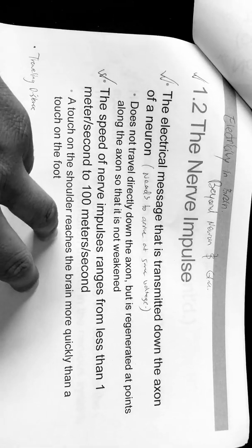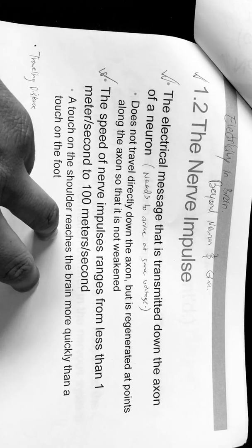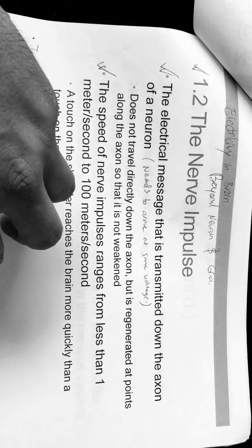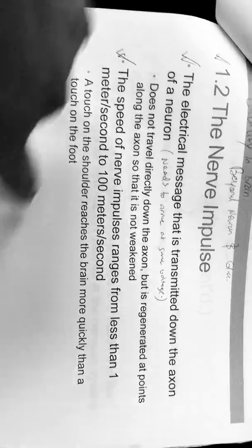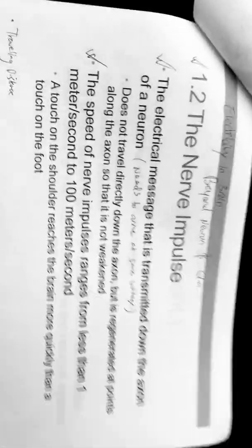The electrical messages that are transmitted down the axon of a neuron does not travel directly down the axon but is regenerated at points along the axon, so it is not leaking.